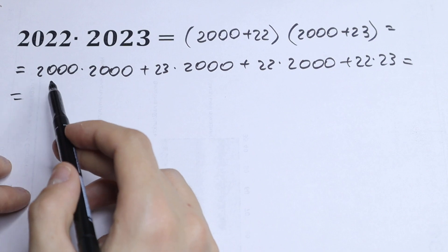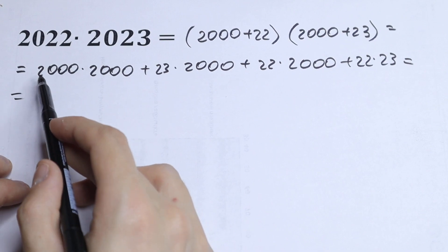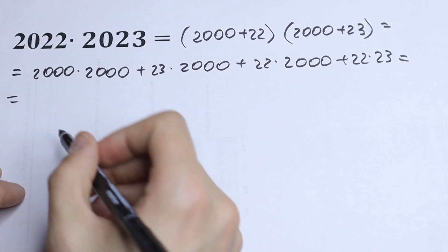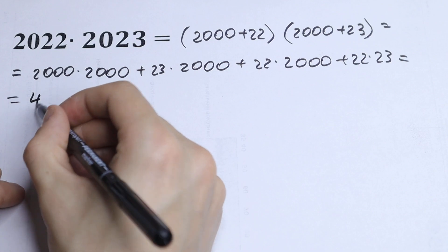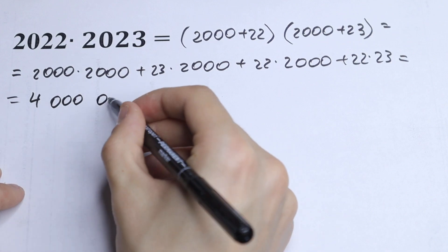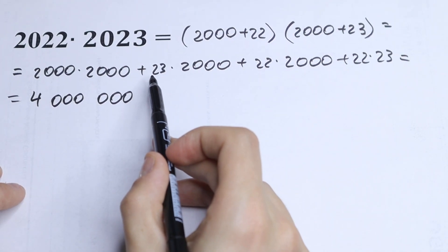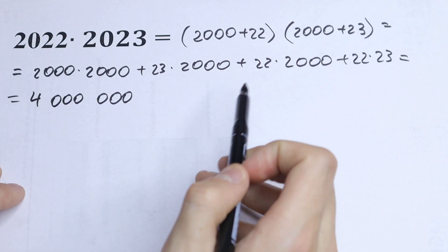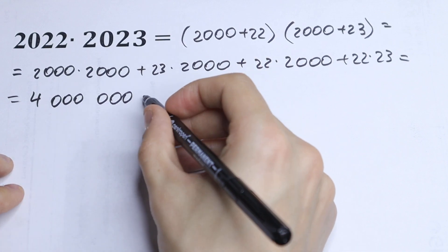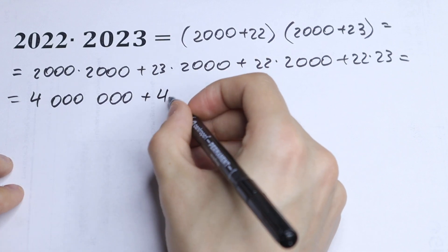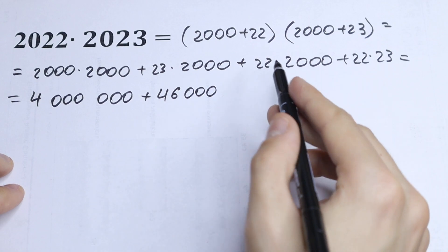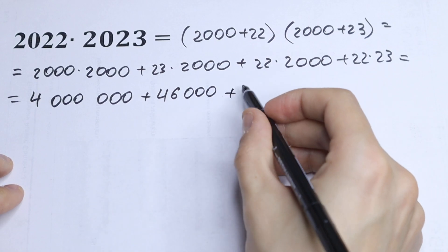So let's multiply. We can of course multiply 2000 times 2000 — it will be equal to 4 million. Of course we can multiply 23 times 2000 — it will be equal to 46 thousand. And 22 times 2000 gives us 44 thousand.